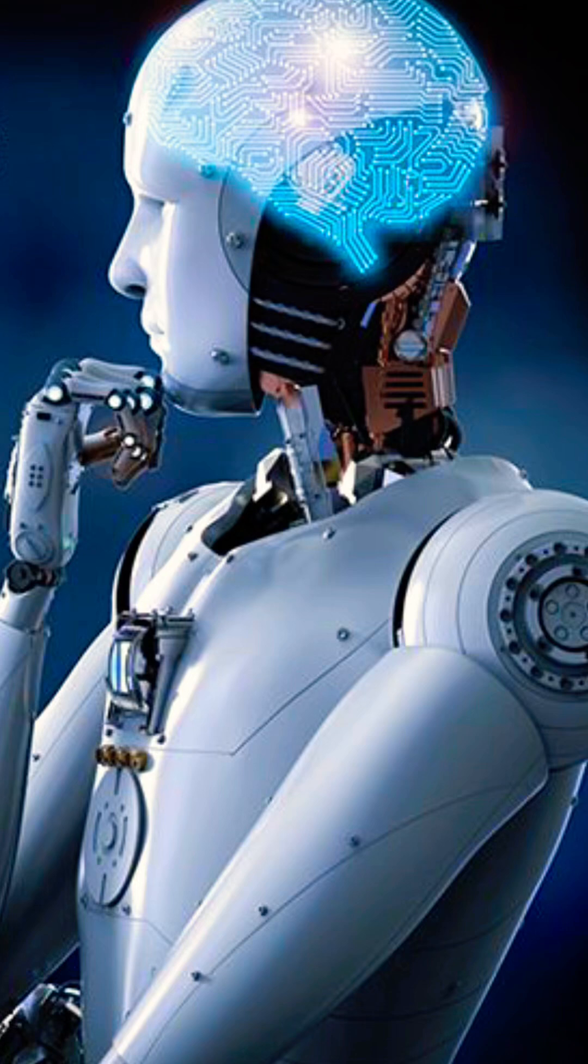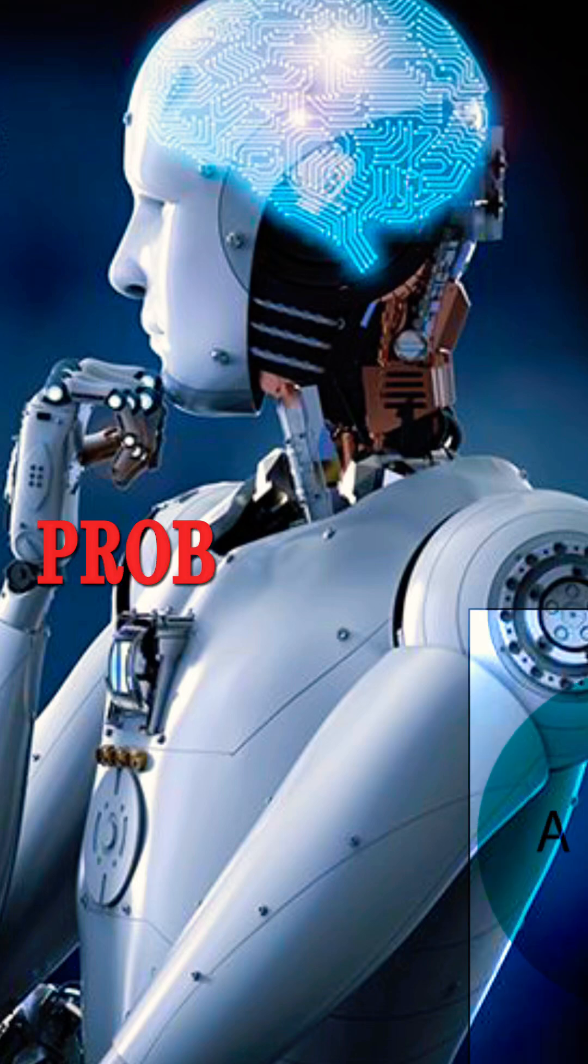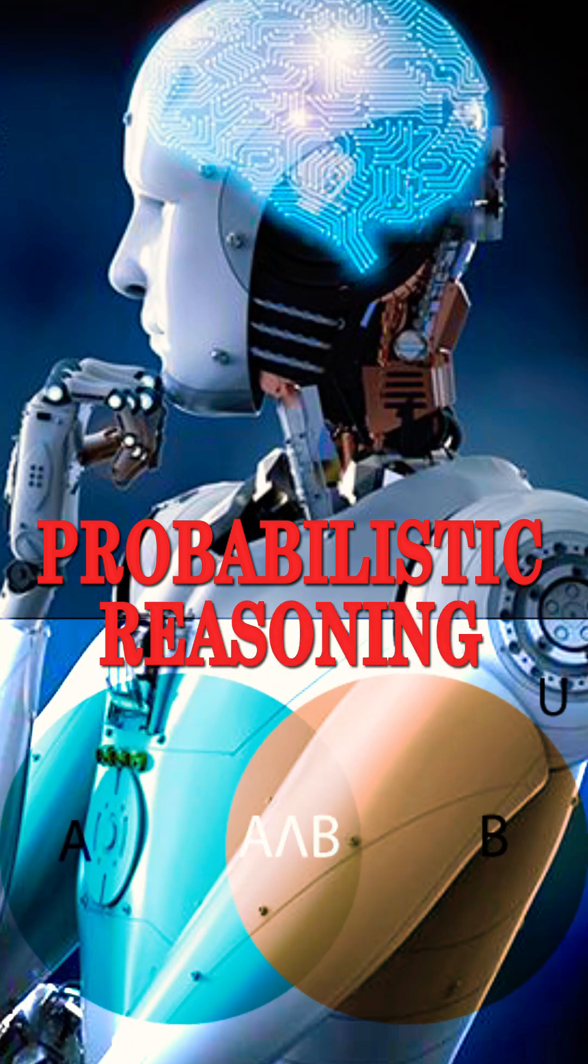Have you ever wondered how artificial intelligence makes decisions? One key component is probabilistic reasoning, which allows AI to make decisions based on probabilities and uncertainty.